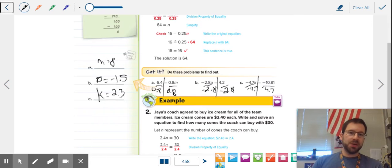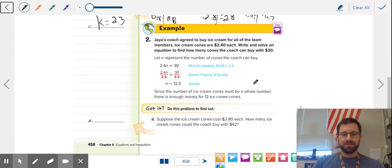It's important to check because you need to make sure you're doing it right. Anytime we have an equation, you can always make sure, is my answer right or wrong? There's no excuse for getting any of these wrong because you can just plug your answer in and make sure it's good. Let's take a look at a word problem. Ice cream cones cost $2.80 each. So $2.80 per cone. How many ice cream cones could the coach buy with $42?